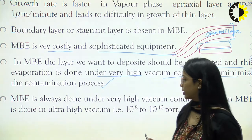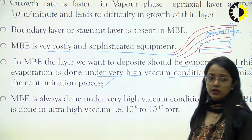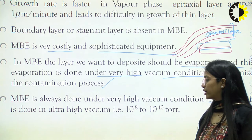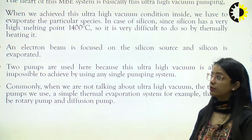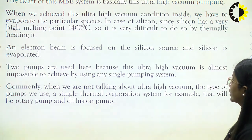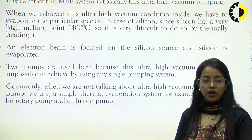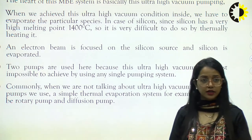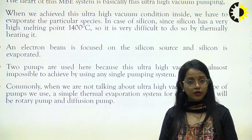MBE is always done under high vacuum. Silicon MBE is done in ultra high vacuum of the order of 10^-8 to 10^-10 torr. The heart of MBE is basically this ultra vacuum pumping system. When we achieve ultra high vacuum, we evaporate the particular species. In the case of silicon, since it has a very high melting point of 1400 degrees Celsius, it is very difficult to achieve this with a thermal heating process.